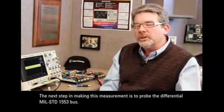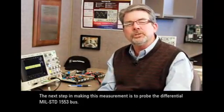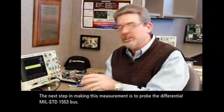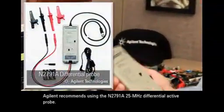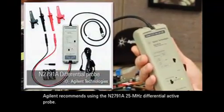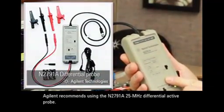The next step in making this measurement is to probe the differential MIL-STD 1553 bus. Agilent recommends using the N2791A, which is a 25 MHz differential active probe.